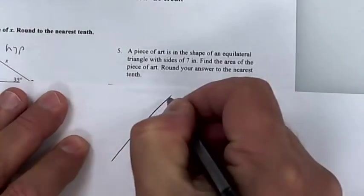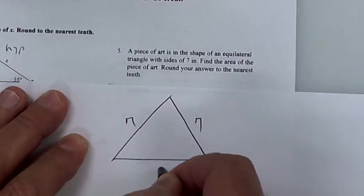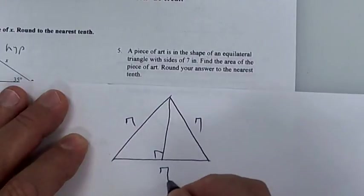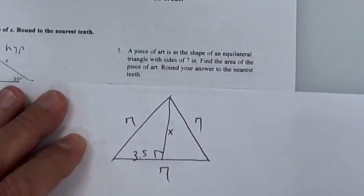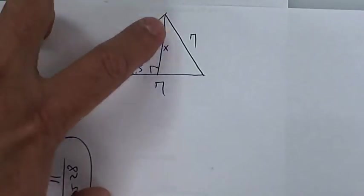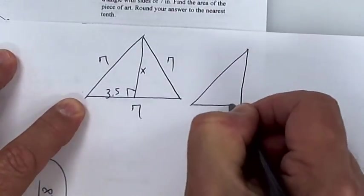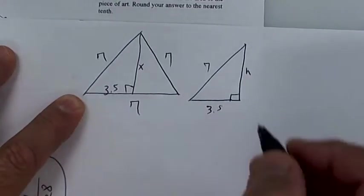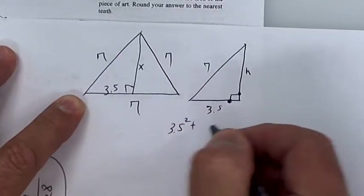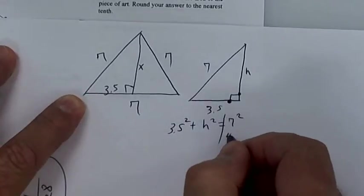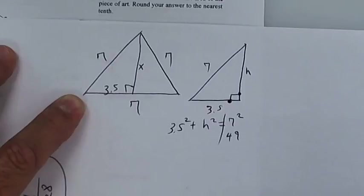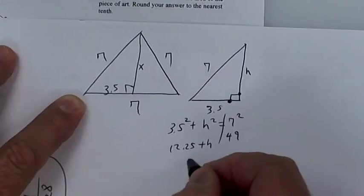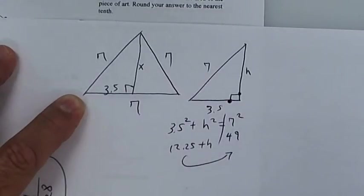This one is an equilateral triangle. Draw an equilateral triangle and put 7, 7, 7. Drop an altitude straight down — that altitude is going to split the 7 to a 3.5. Put an H here for the height. We're going to use Pythagorean's theorem to get the height, so pull that little triangle out. So it's 3.5 squared plus H squared is equal to 7 squared. 7 times 7 is 49; 3.5 times 3.5 is 12.25. Subtract 12.25 from 49, then hit shift square root. I get 6.06 as the height.